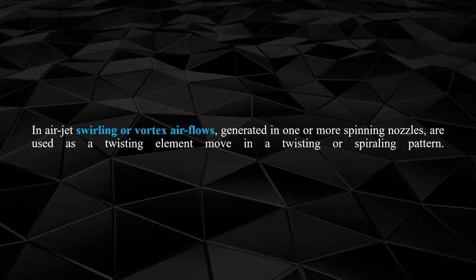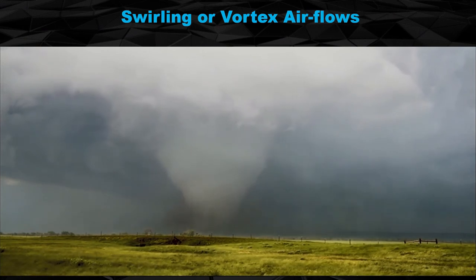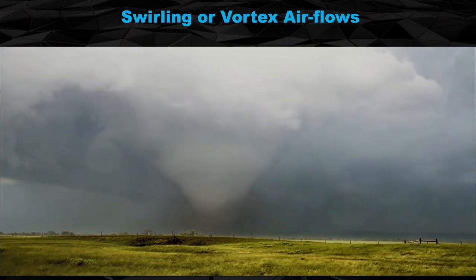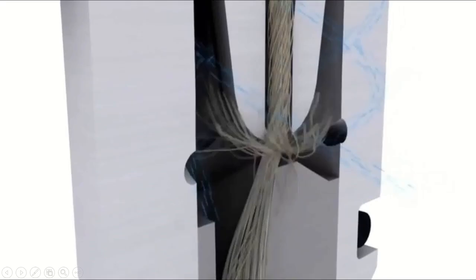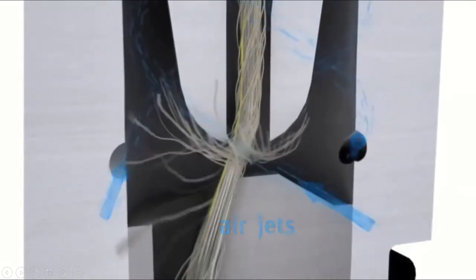In air jet spinning, swirling or vortex air flows are generated in one or more spinning nozzles, which are used as twisting elements. These flows move in a twisting or spiraling pattern. Swirling or vortex air flows can be compared with a tornado. When air moves in a circular column, all particles try to rotate along with the rotation of air. Inside the nozzle, compressed air rotates in a circular tubular form, so contacted fibers try to rotate in the direction of vortex flows. This imparts twist on the fiber.